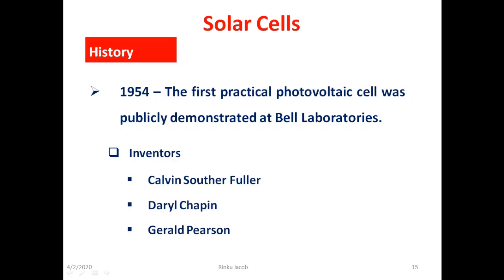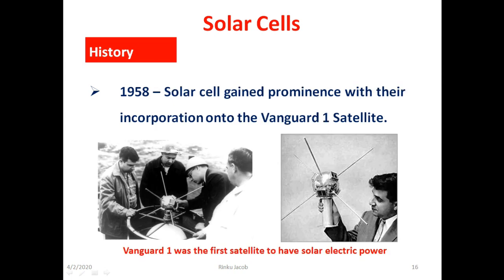In 1954 the first practical photovoltaic cell was publicly demonstrated at Bell Laboratories. The inventors were Calvin, Daryl and Gerald. In 1958 solar cell gained prominence with their incorporation onto the Vanguard 1 satellite as an alternative power source to the primary battery power. Vanguard 1 was the first satellite to have solar electric power.